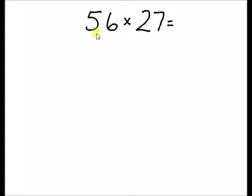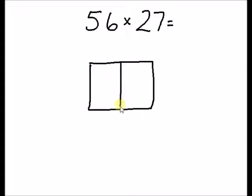The first step is knowing how many digits you are multiplying. In this case we have two digits times two digits. That means we need to draw a lattice box that will allow us to have two digits times two digits.